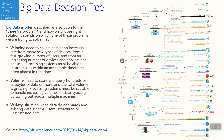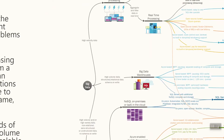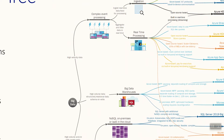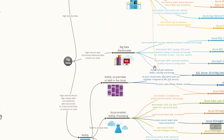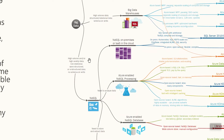This is a decision tree which shows the three groups we discussed. At the top you can see complex event processing. Then there is big data warehousing, which means processing high volumes of structured data. And the third one is NoSQL processing, which means working with different formats of data.